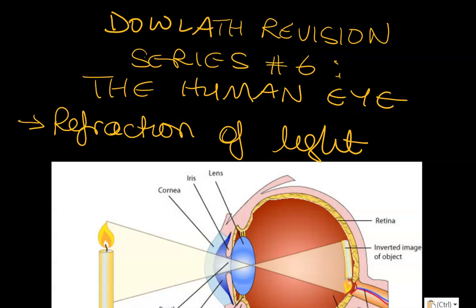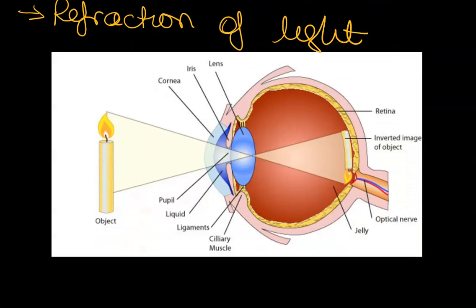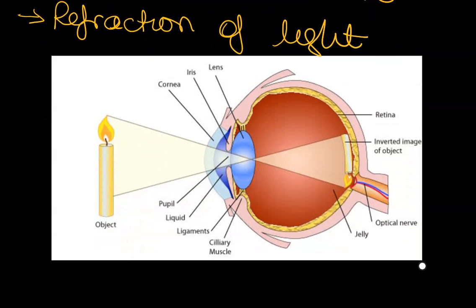Now the human eye is an application of the refraction of light, and as you can see in this very simple diagram here, we're going to use this diagram to focus on how the refraction would occur.